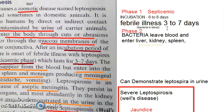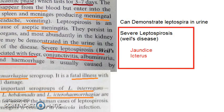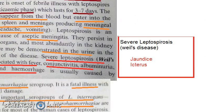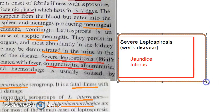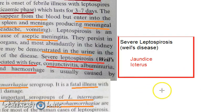If it is after the first week of illness, you have to collect urine. In the severe form of leptospirosis, which is called Weil's disease, you will mainly see icterus — that is, jaundice — and conjunctivitis.